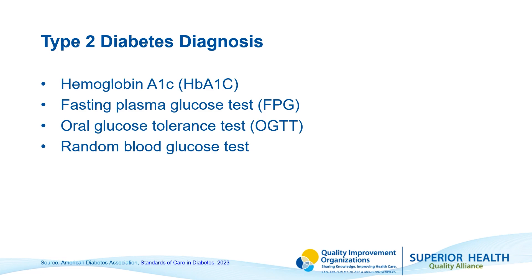The U.S. Preventive Services Task Force and the American Diabetes Association recommend the following screening for type 2 diabetes and prediabetes in asymptomatic adults aged 35 to 70 years old. The first one is hemoglobin A1c, and this is a great test if you want to know somebody's average blood sugar levels for the past two to three months.